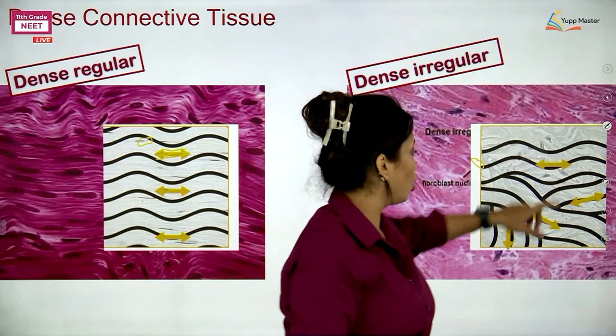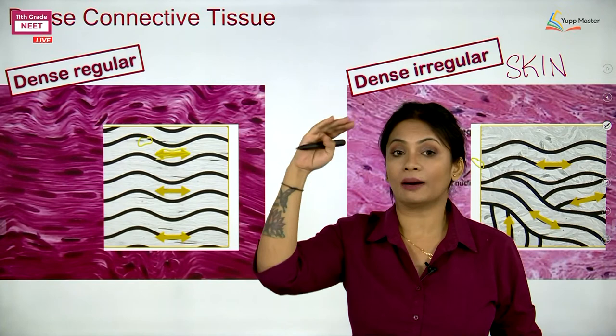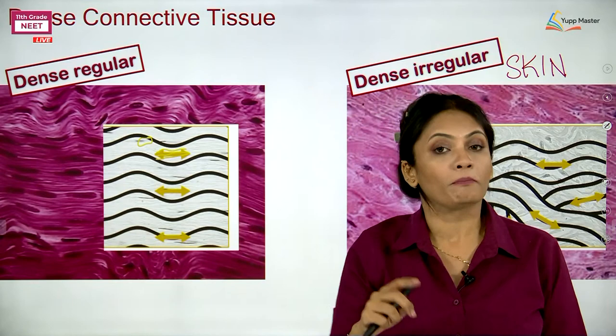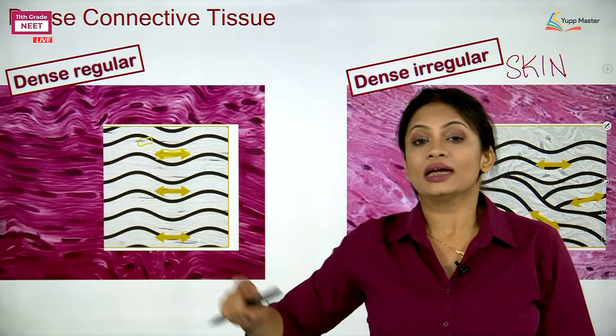An example of dense irregular connective tissue is the layer of skin. I am not talking about the upper layer — remember, the uppermost layer is the epidermis, which is made up of epithelial tissue. But skin also has an underlying dermis layer, and that dermis is dense irregular connective tissue.